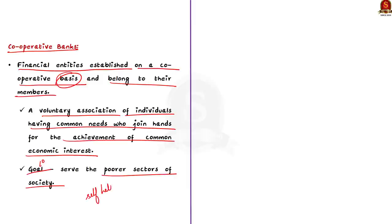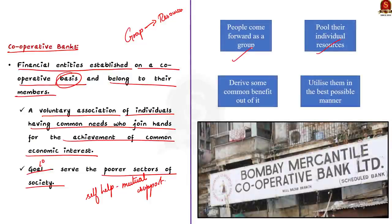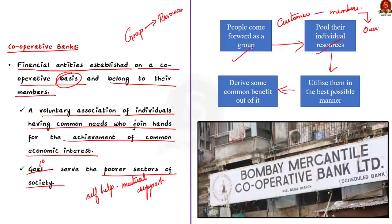The main objective is to provide support to the members themselves. People come forward as a group, pool their individual resources, utilize them in the best possible manner, and derive some common benefit out of it. This is exactly what the word cooperative basis means. To put it in very simple words, the customers of a cooperative bank are also its members. This is the major difference between a bank and a cooperative society, because private banks are owned by either the individual or general partners, but cooperative banks are owned by their members.